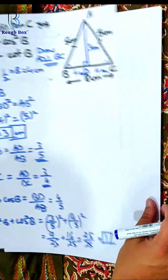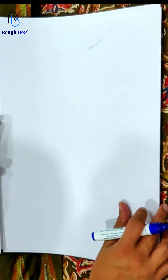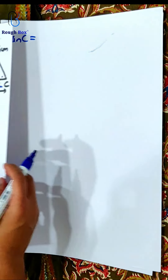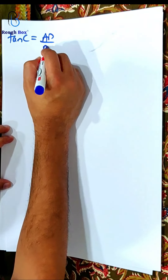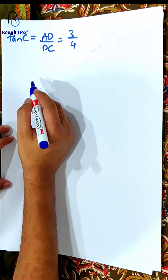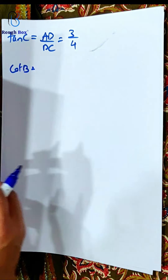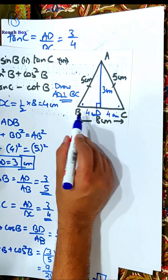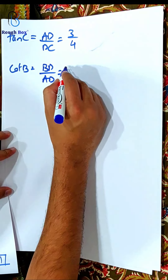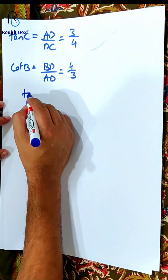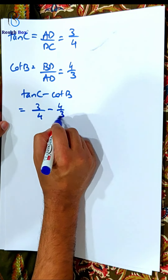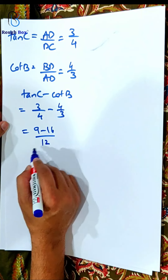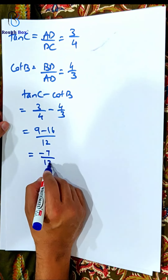Last part: tan C and cot B. So tan C — the opposite of C is 3 and adjacent is 4 — so AD upon DC: 3 by 4. The second part is cot B — adjacent upon opposite — BD upon AD: 4 by 3. The expression tan C minus cot B: 3 by 4 minus 4 by 3 gives 9 minus 16 by 12. So my answer should be minus 7 by 12. How many managed to get this correct? Great job.